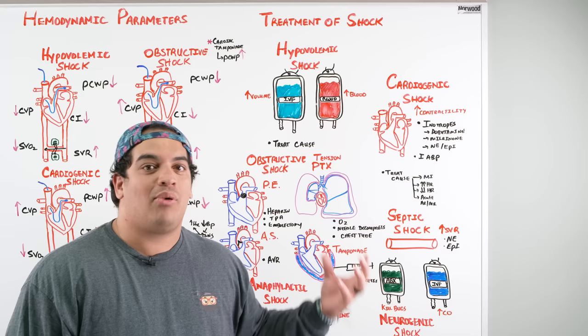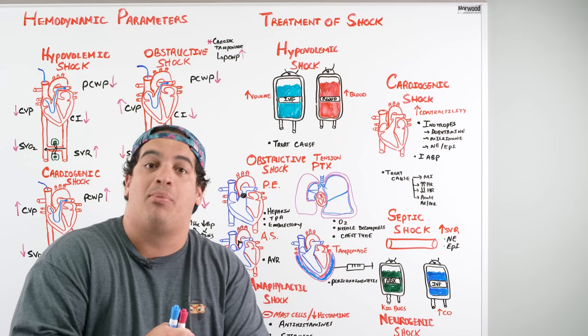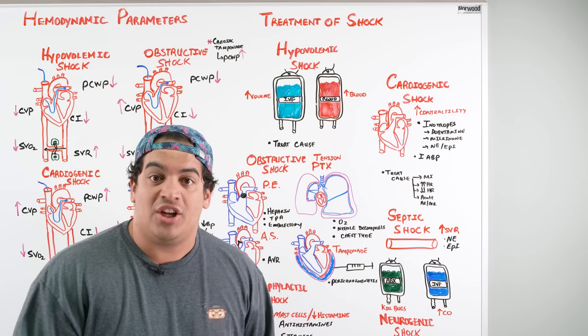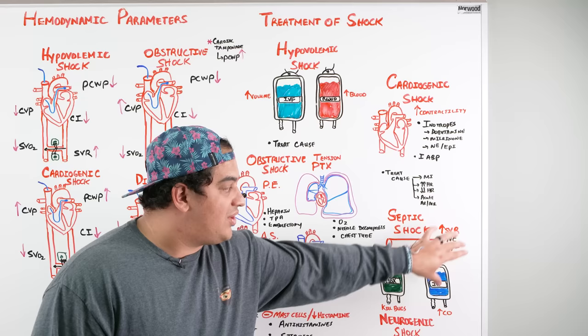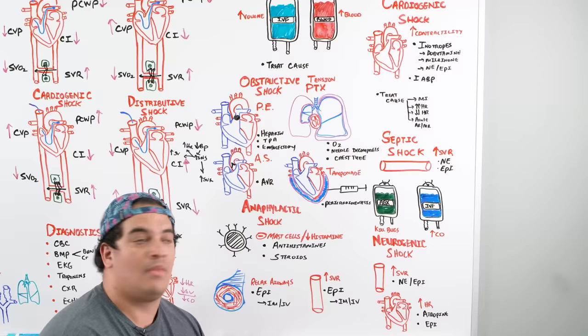Treatment of septic shock: give vasopressors (norepinephrine, epinephrine) to counteract vasodilation and support blood pressure. Administer IV antibiotics to treat the infectious source. Give IV fluids to increase venous return and preload, improving cardiac output and blood pressure.